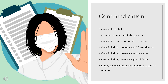Contraindications — who should not take citagliptin phosphate oral? Chronic heart failure. Acute inflammation of the pancreas. Chronic inflammation of the pancreas. Chronic kidney disease stage 3b (moderate). Chronic kidney disease stage 4 (severe). Chronic kidney disease stage 5 (failure). Kidney disease with likely reduction in kidney function.